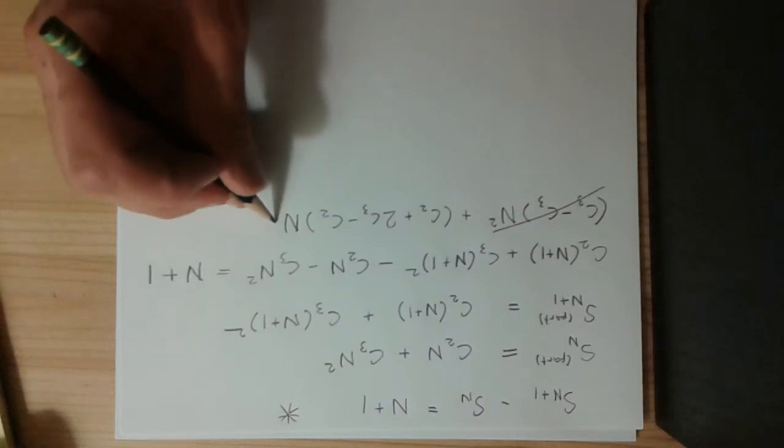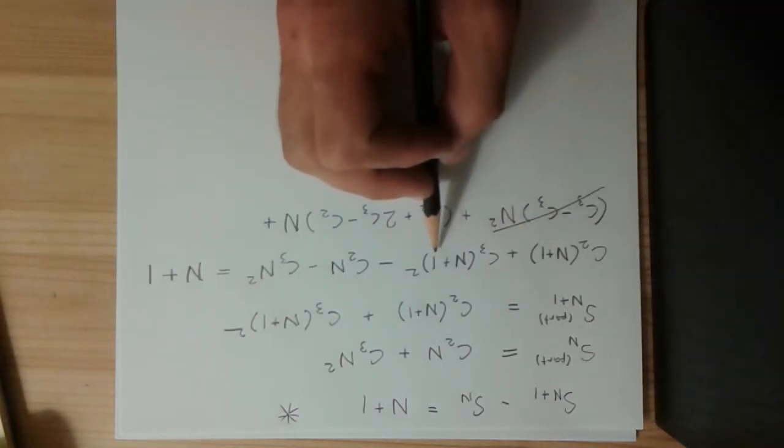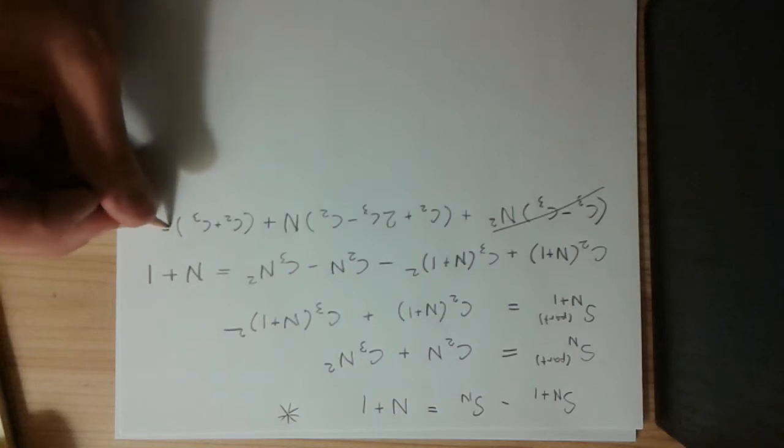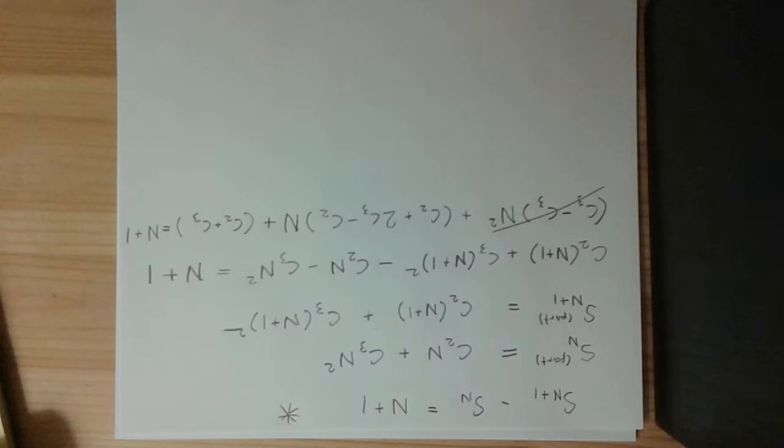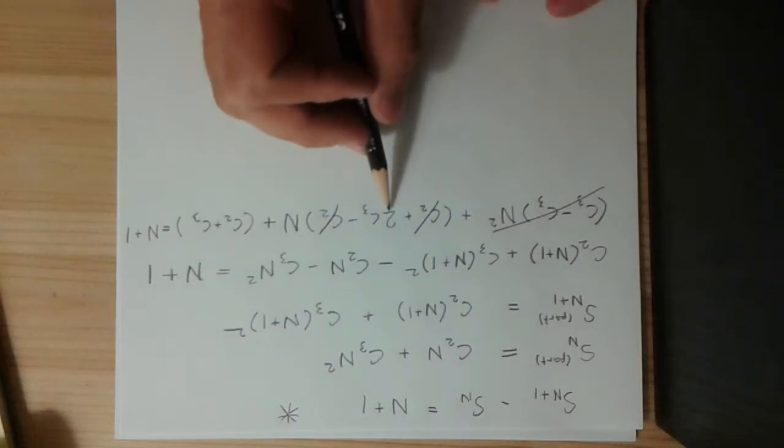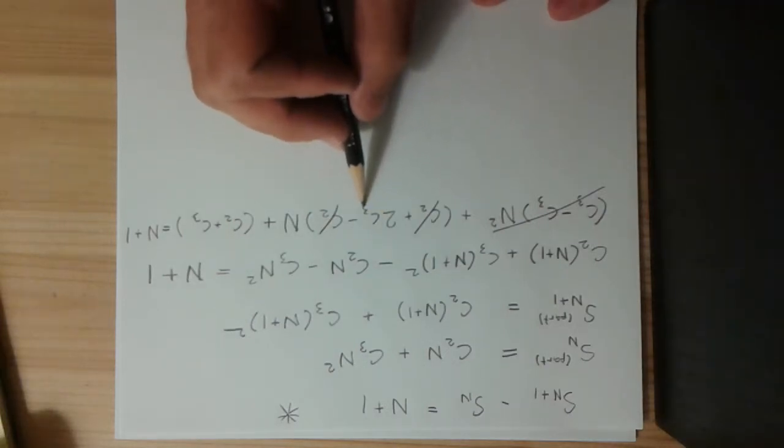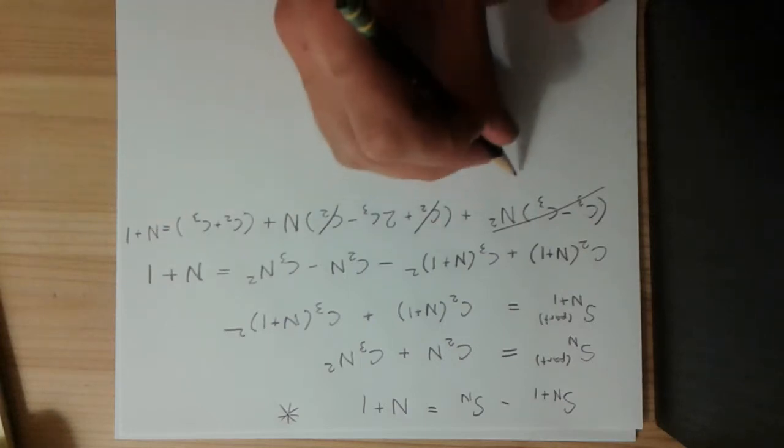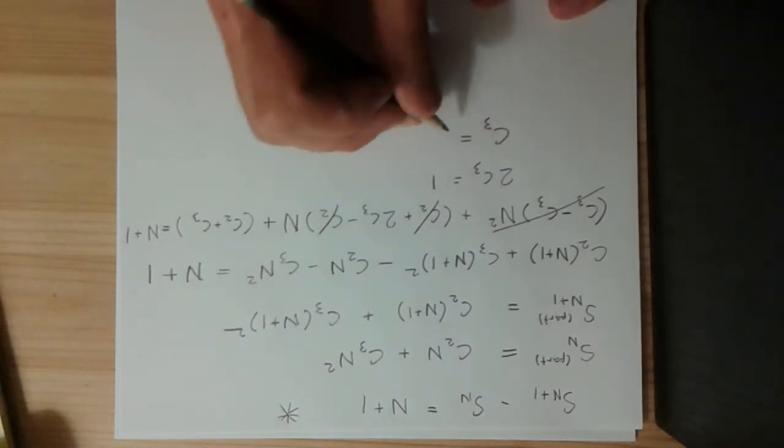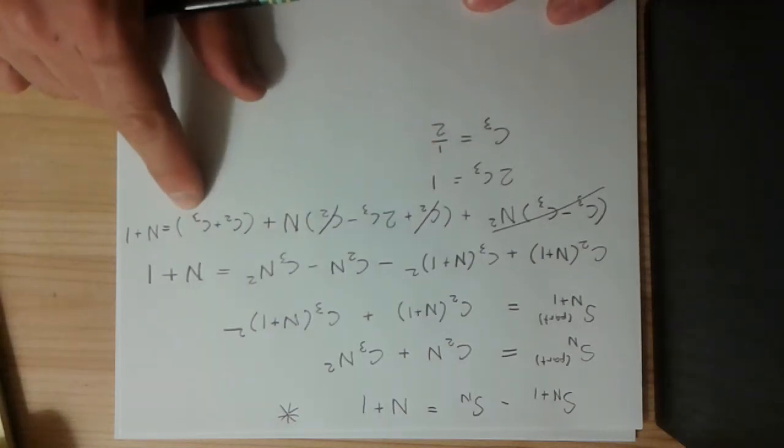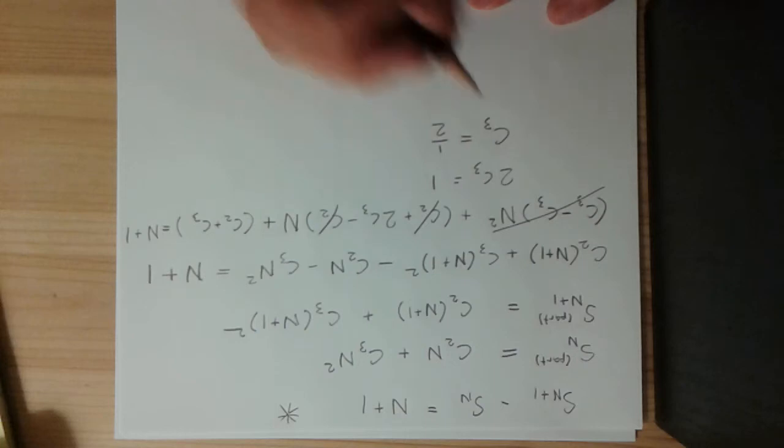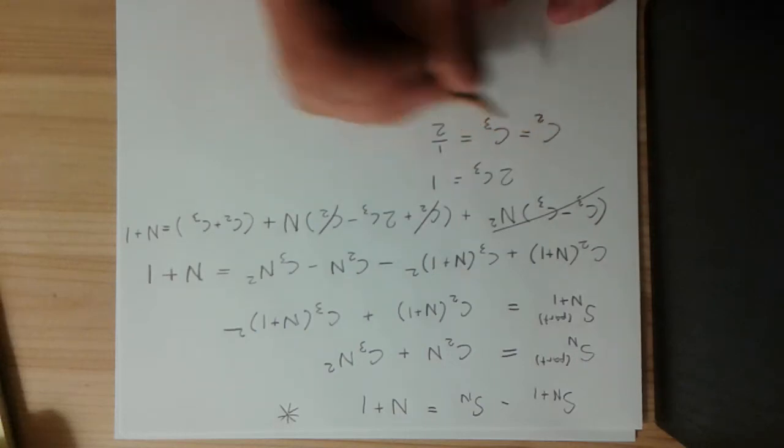Now, how about the constants? Here looks like we're going to have a C2, and here we're going to have a C3. And, this is all equal to n plus 1. Okay. So, C2 minus C2, those cancel. And, so we just have 2 times C3 times n is equal to n. So, 2C3 is equal to 1, in other words. So, C3 is equal to 1 half. And, over here we have C2 plus C3. That's the constant terms. These must be equal to 1. So, that means that C2 must also be 1 half. So, C2 and C3 are both 1 half.